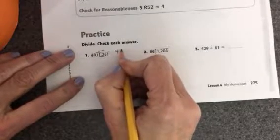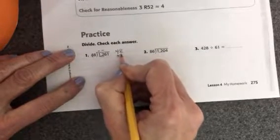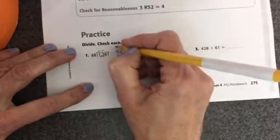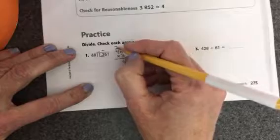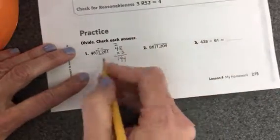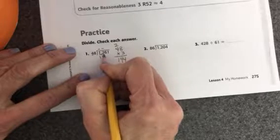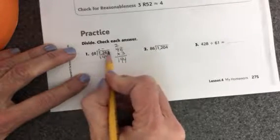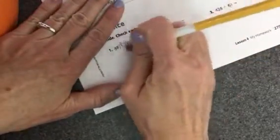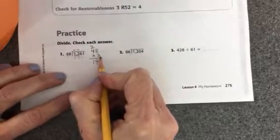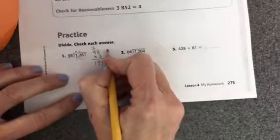Okay, so 4 will go into 12 three times. So here to the side, I'm going to do 48 times 3 and see if this will work. 8 times 3 is 24. 4 times 3 is 12, plus 2 is 14. So I notice that 144 is larger than 124. So I'm going to erase that, and instead of using 3, I need to use a number that's close to 3 but smaller.